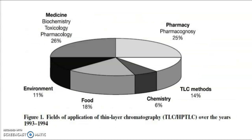The fields of application of thin layer chromatography are broad. From 1993 to 1994 data, TLC is used in medicines at about 26%, as well as in biochemistry, toxicology — which is the study of the effect of chemical reagents on biological systems — and pharmacology. In pharmacy and drug preparation, about 25% of methods use TLC. It is also used in environmental and food analysis for purity checking and quality control, and in chemistry for organic reagents.